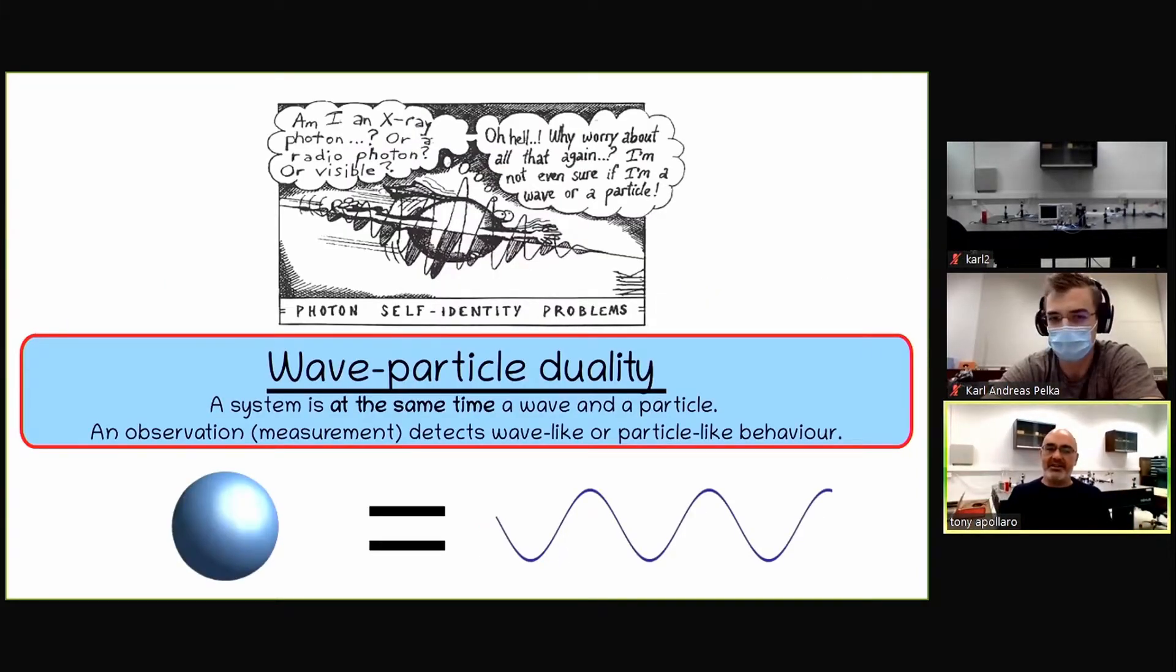Because a system like a particle is at the same time a wave and a particle. And only when you measure it, you see a wave-like or a particle-like behavior. So it's very difficult to think at it, to imagine it. Because a particle for everyone is something that is localized in space. It is here, now. A wave is something that stretches over extended space.